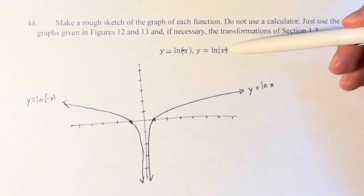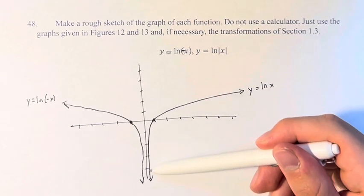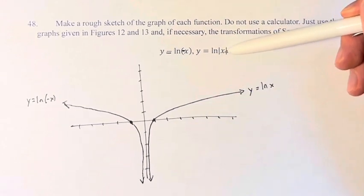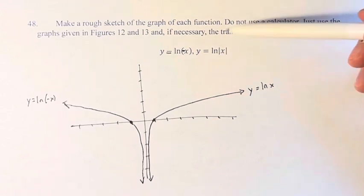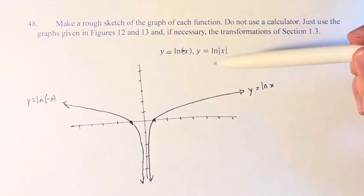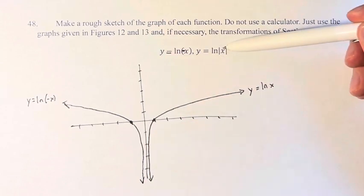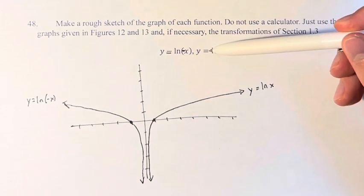That means we are taking the natural log of the absolute value of x. So when x is positive, it's just y = ln(x). So this graph right here.